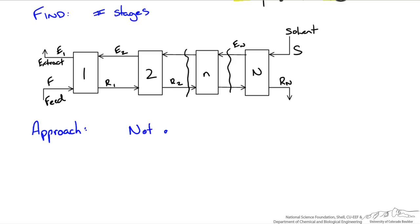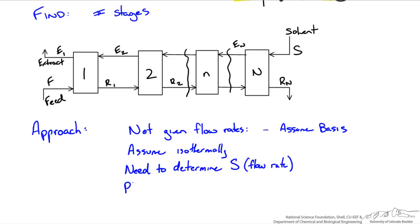We're not given flow rates which means we'll probably have to assume a basis. We'll also assume that the system operates isothermally and that any enthalpy associated with mixing is negligible. Since we're given our composition of raffinate and extract, using the Hunter-Nash method we need to determine our solvent flow rate. Once we have S, we'll plot these points on our ternary diagram: our feed composition, solvent, extract, raffinate leaving, and this helps us calculate what is known as our mixture point.